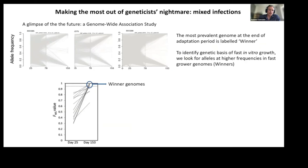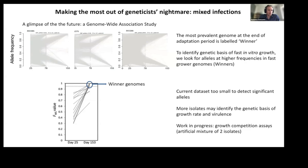Finally, this data can be analyzed in a GWAS-like manner, because we have about 20 genomes that have out-competed others in vitro — I call them the winner genomes, because they are growing faster. We can now ask: what do winner genomes have in common? Are certain alleles significantly more represented in these fast-growing genomes? Can we identify new genes whose function is related to growth rate in vitro and potentially virulence in vivo? Unfortunately, my current dataset is too small to detect significant alleles, and we will simply need more isolates.